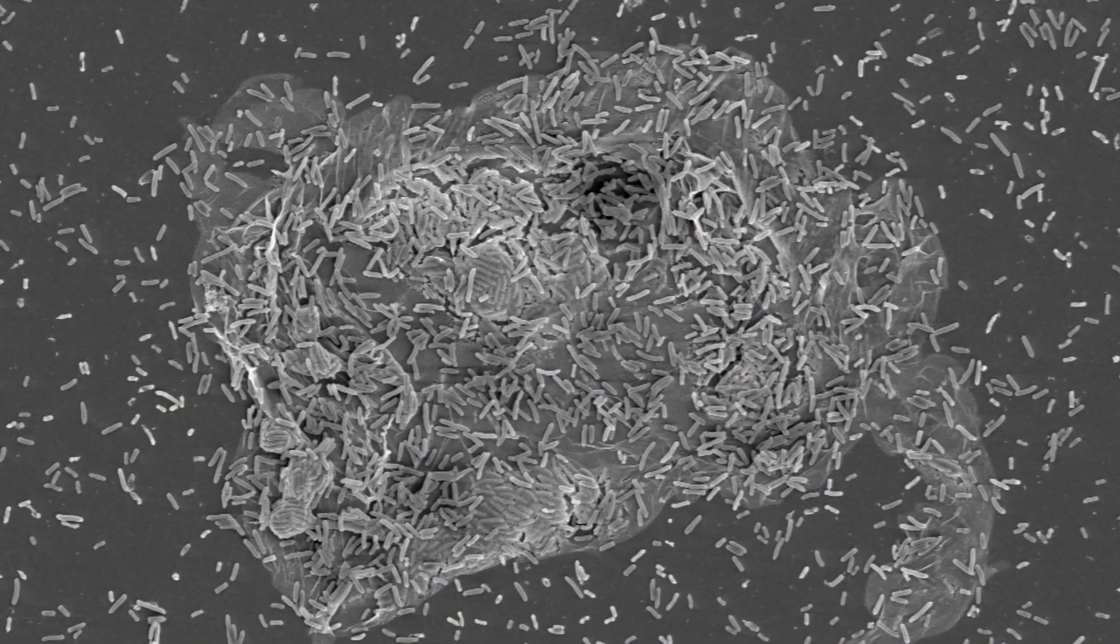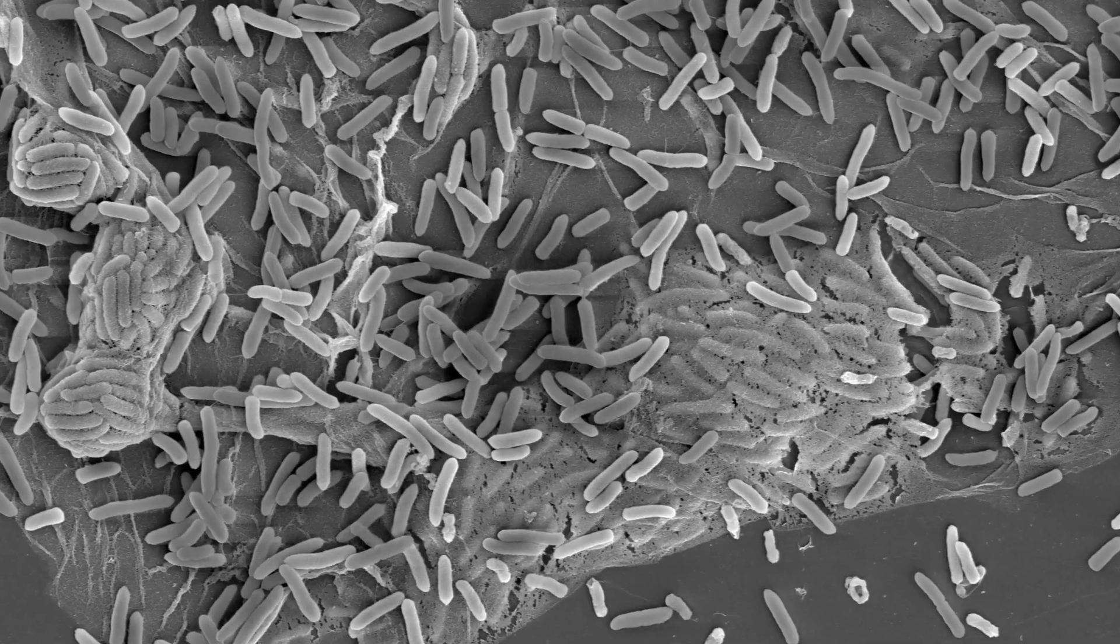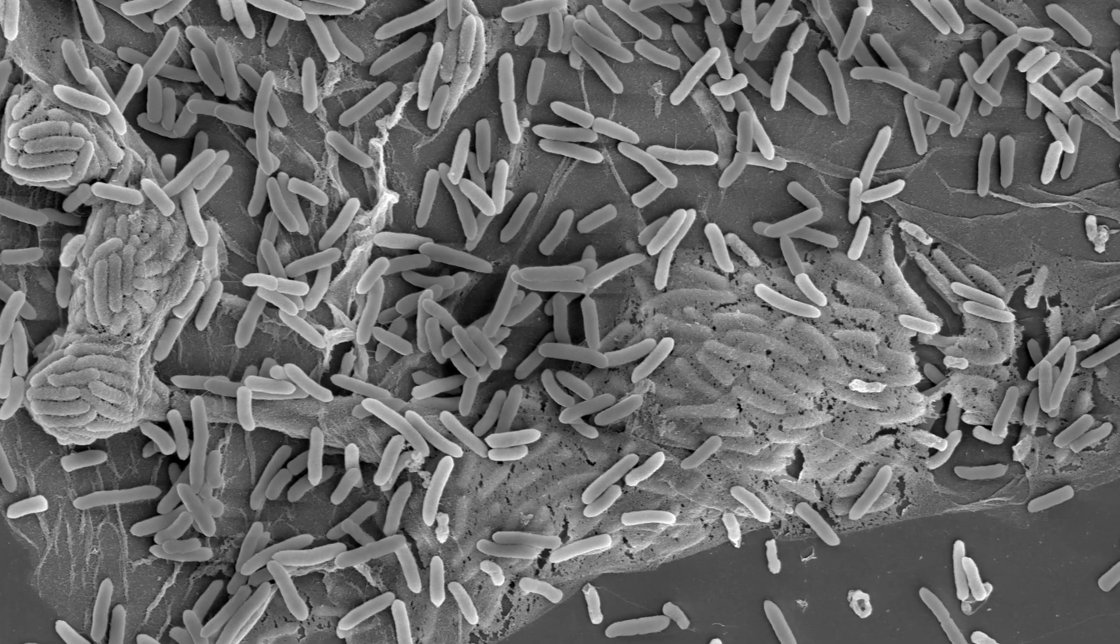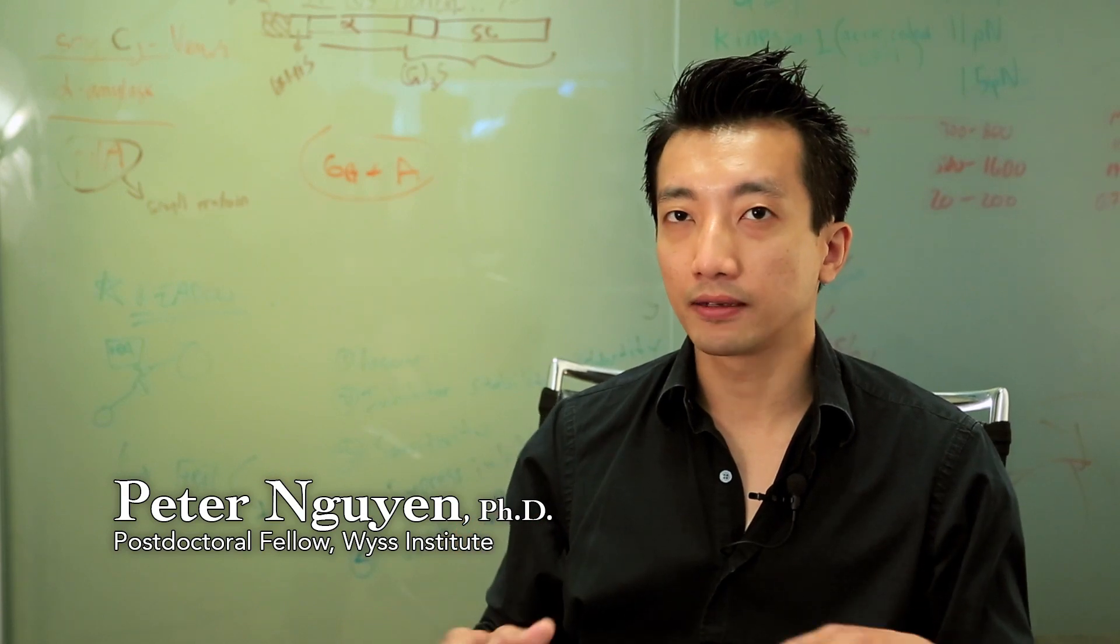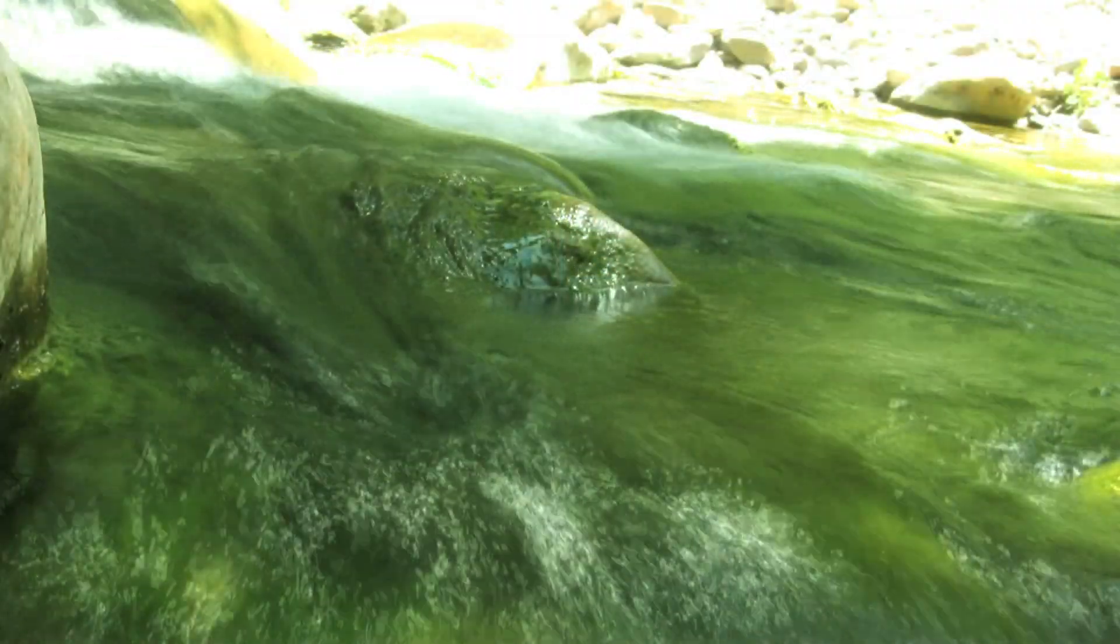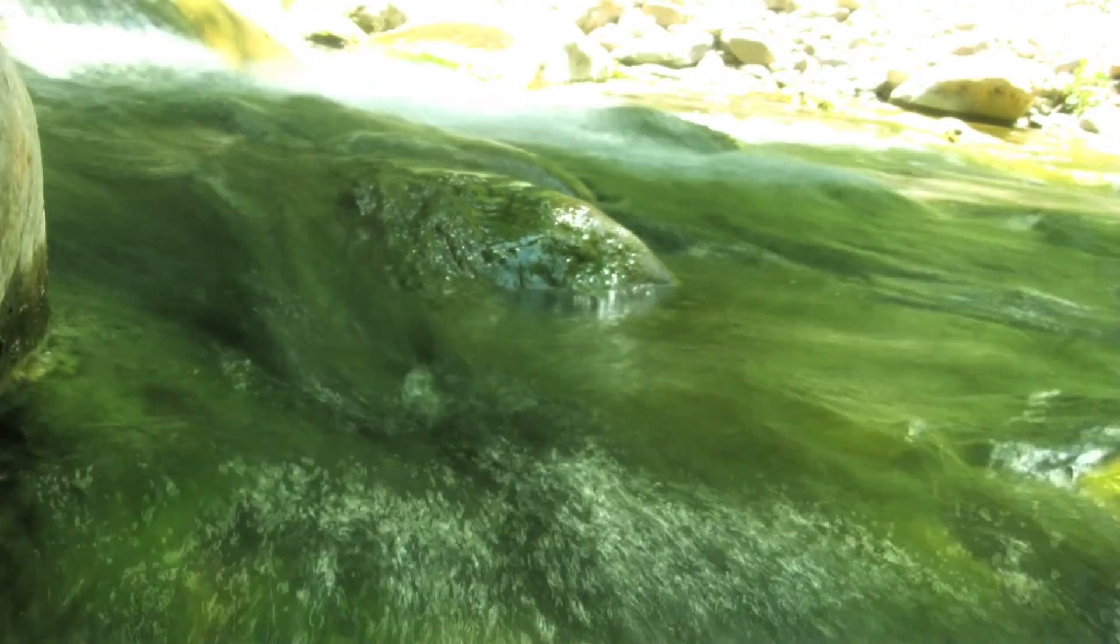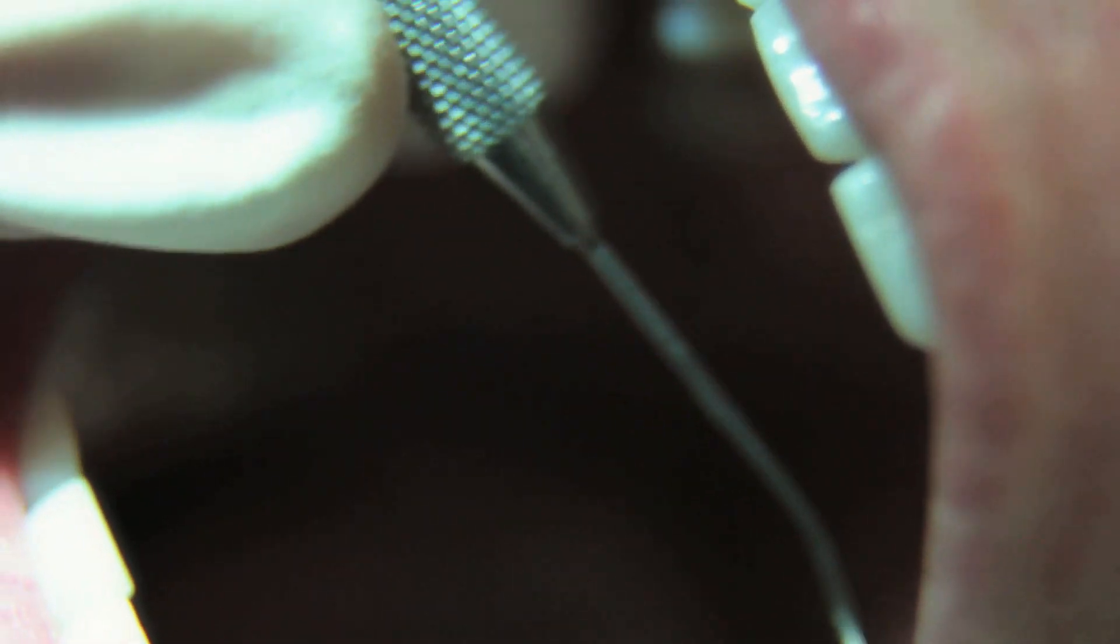Biofilms are essentially groups of bacterial cells, communities that are encapsulated in a matrix that the cells themselves produce. They can actually secrete something that will modify their environment. It's something for them to stick onto, such as a rock in a stream, or to stick onto your teeth and that's where we get plaque from.